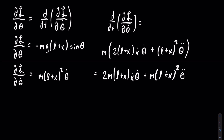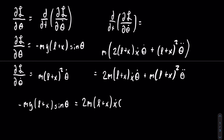Equating that with the partial of the Lagrangian with respect to theta, we get that negative mg times the quantity l plus x, times sine of theta, is equal to 2m times l plus x, times x dot theta dot, plus m times the quantity l plus x, squared, times theta double dot.